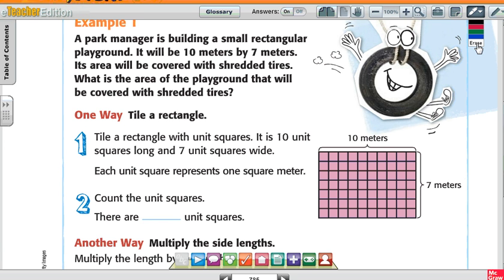So, for example, a park manager is building a small rectangular playground. It will be 10 meters by 7 meters. Its area will be covered with shredded tires. What is the area of the playground that will be covered with shredded tires?